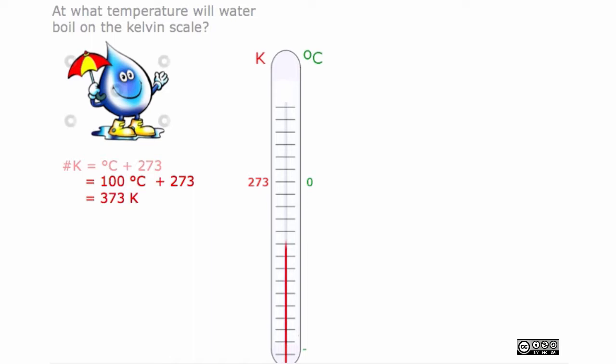From what we just calculated, we can notice that on the thermometer, 373 Kelvin is equal to 100 degrees Celsius.